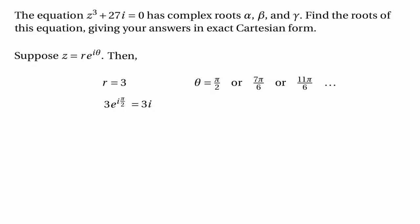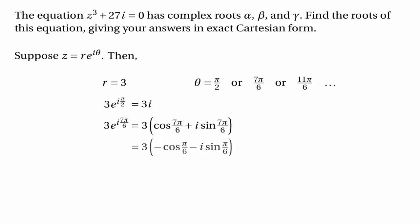The first possibility is that θ is π over 2, in which case you've got the number 3 times e to the i π over 2, but that's just the same as 3i — the complex number with modulus 3 and argument π over 2 is obviously 3i. The next possibility is that θ is 7π over 6, so we're dealing with 3e to the i 7π over 6. To find that in Cartesian form, we need 3 times the cosine of 7π over 6 plus i times the sine of 7π over 6, which is the same as 3 times minus cos(π/6) minus i sin(π/6), giving minus 3√3 over 2 minus 3i over 2.